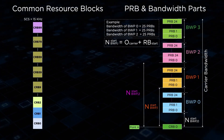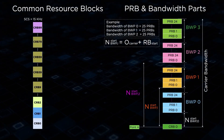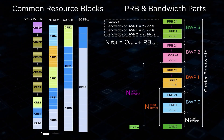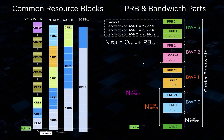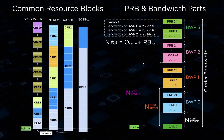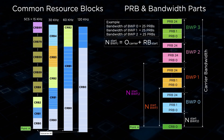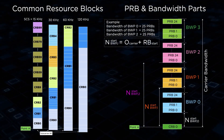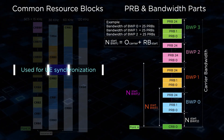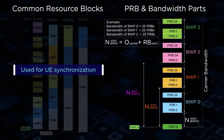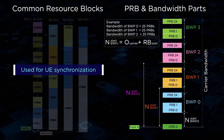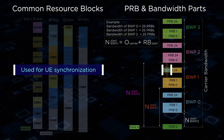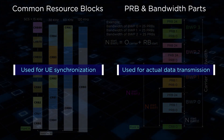This concept can be extended to any carrier bandwidth with multiple sub-carrier spacings that have different bandwidth parts divided for different use case scenarios. CRBs are used for UE synchronization purposes and PRBs for the actual data transmission.